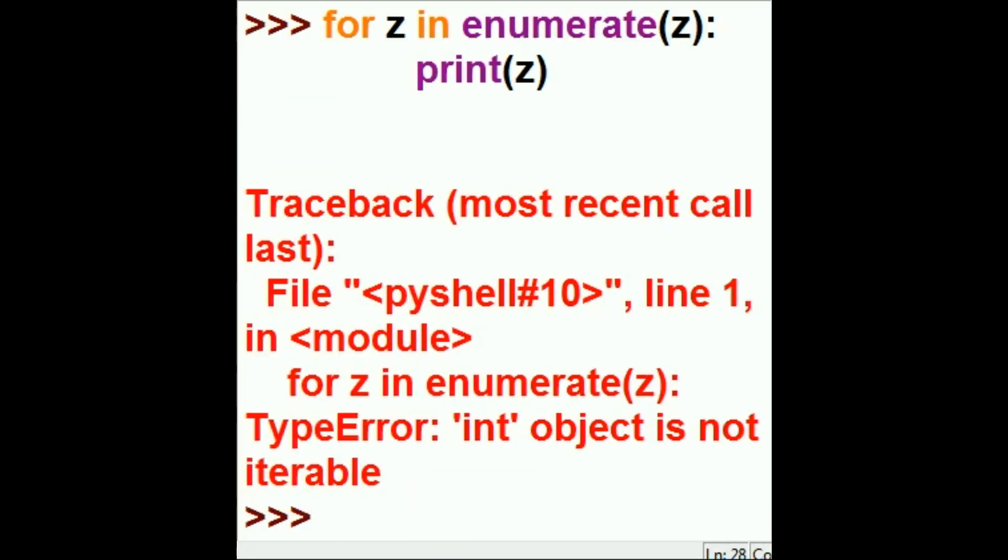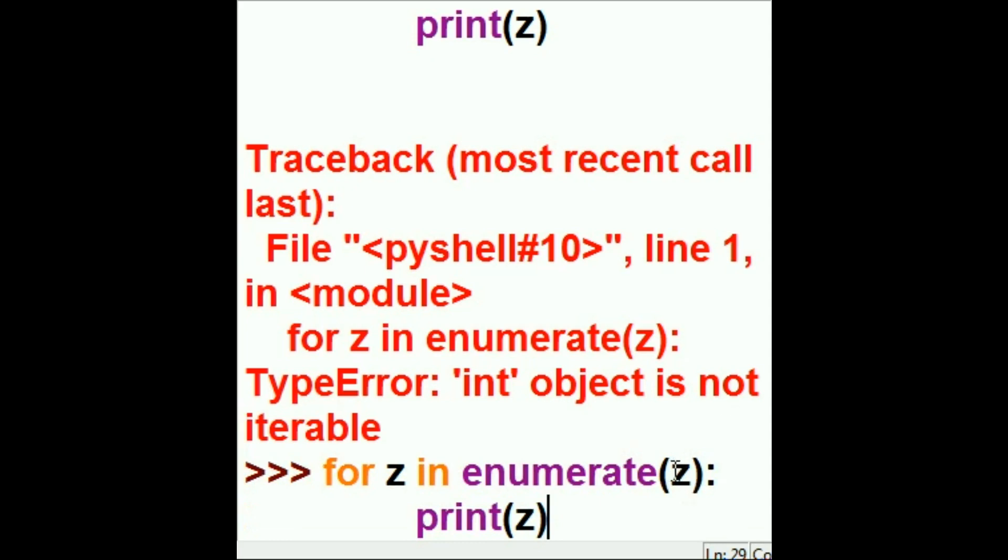And print out Z. Oh, where did I go wrong? For Z. Oh, I can't believe I just did that. Oh my goodness. I am so fired. The name of the array is X, not Z. Oops. All right. For Z in enumerate X. Then print out Z.